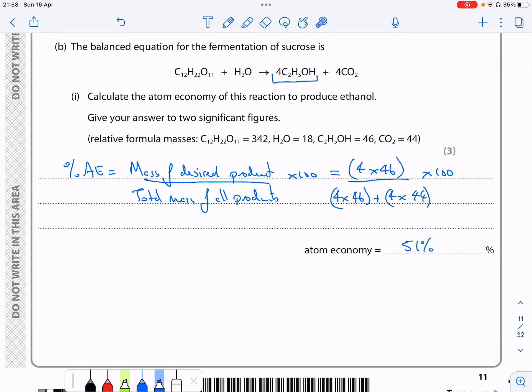This question is using the atom economy equation which you don't get in the exam, so you need to know. The atom economy is the mass of the desired product divided by the total mass of all the products, multiplied by 100.